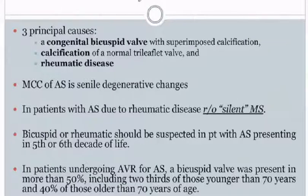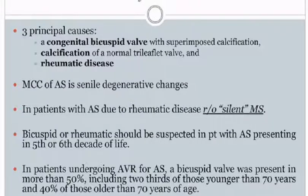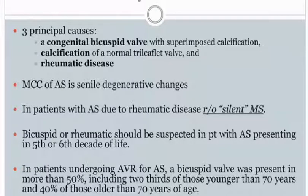The three principal causes are: calcification of the normal tricuspid aortic valve, a congenital bicuspid valve with superimposed calcification — the most common cause — and rheumatic heart disease. In patients with aortic stenosis due to rheumatic disease, always rule out silent mitral stenosis. Bicuspid or rheumatic etiology should be suspected in a patient presenting in the fifth or sixth decade. In patients undergoing aortic valve replacement, a bicuspid valve was present in more than 50%, including two-thirds of those younger than 70 years and 40% of those older than 70 years.